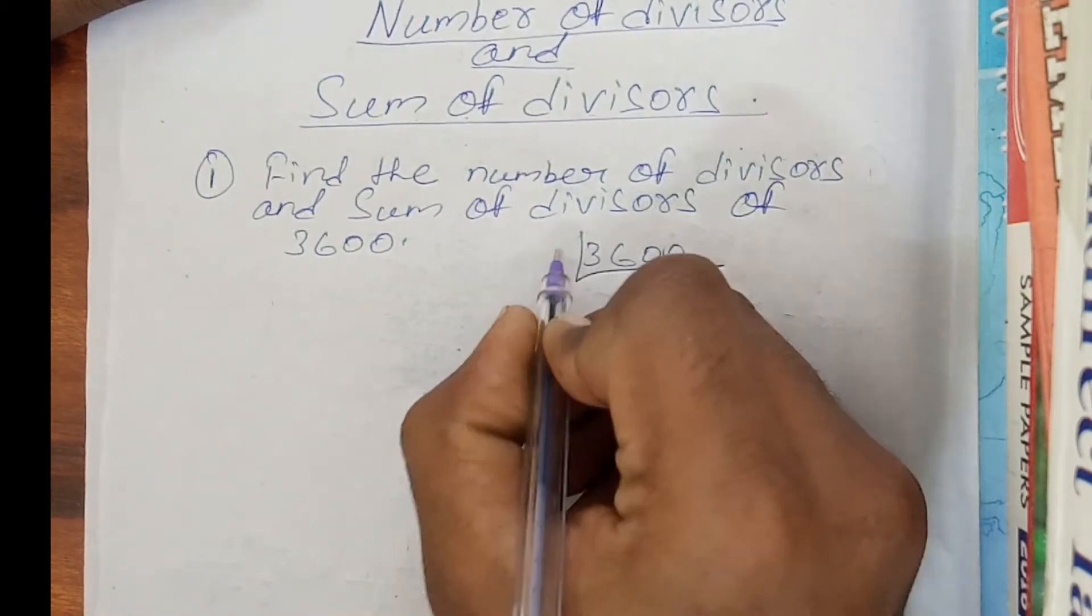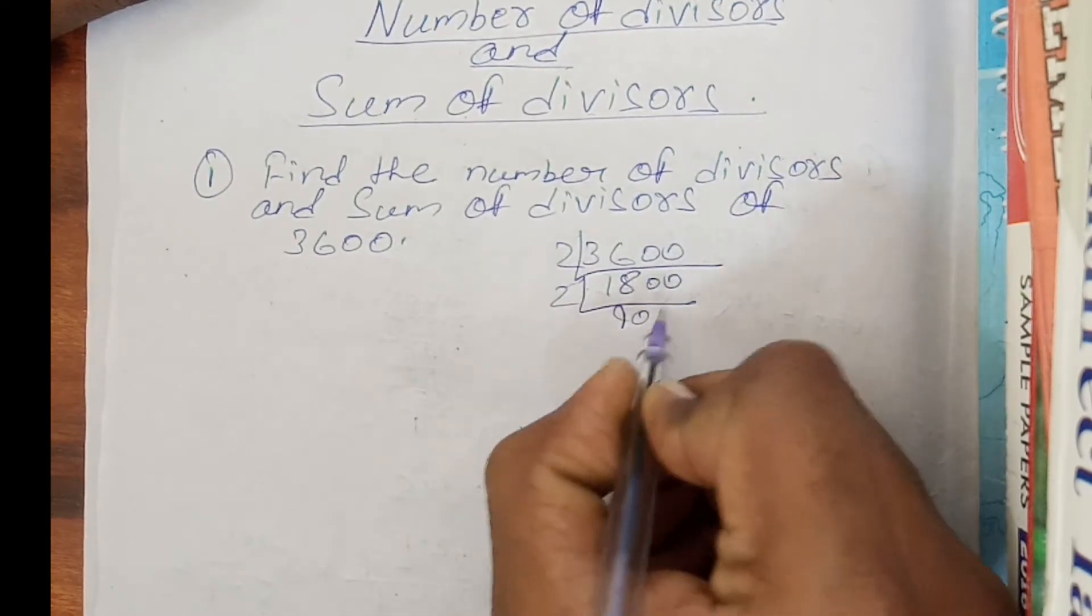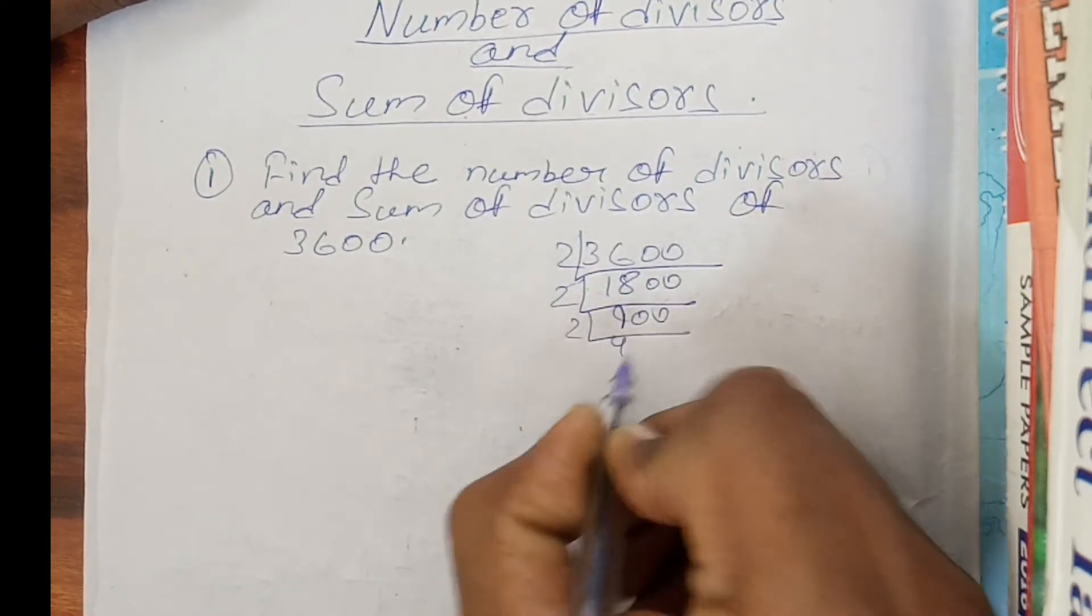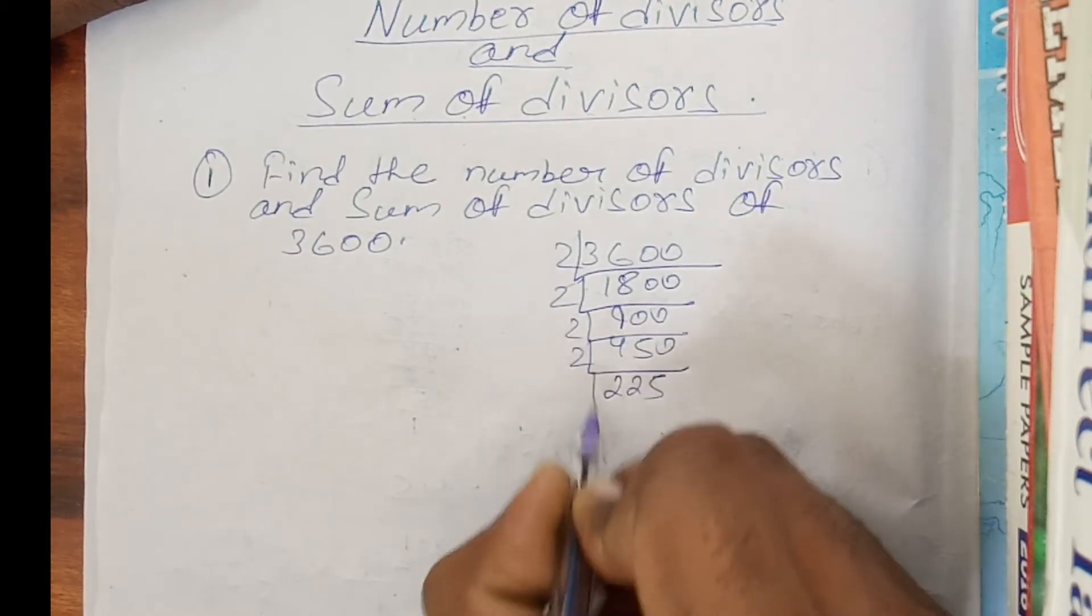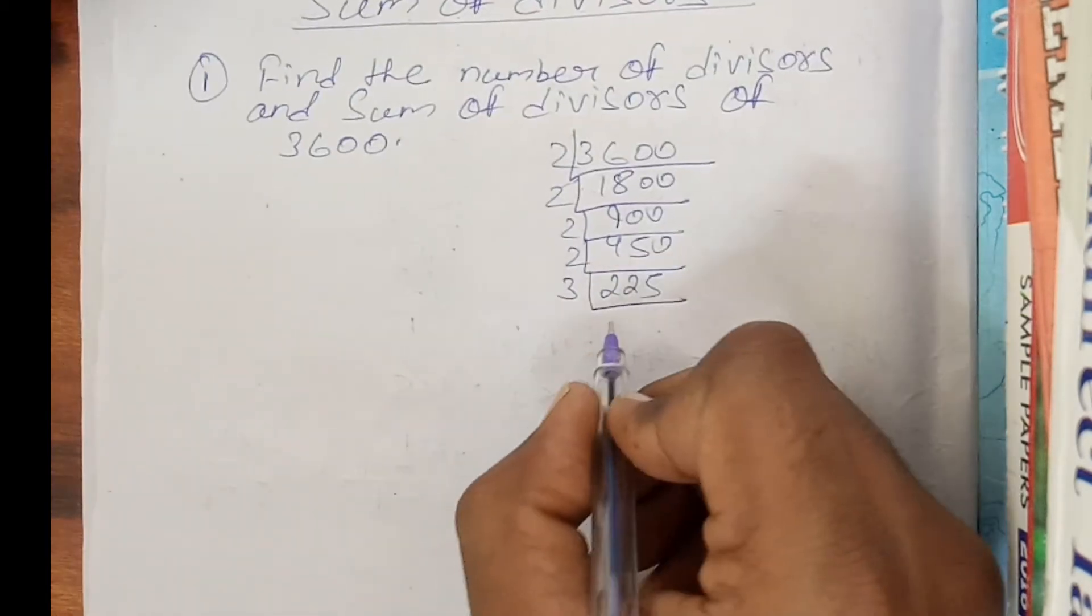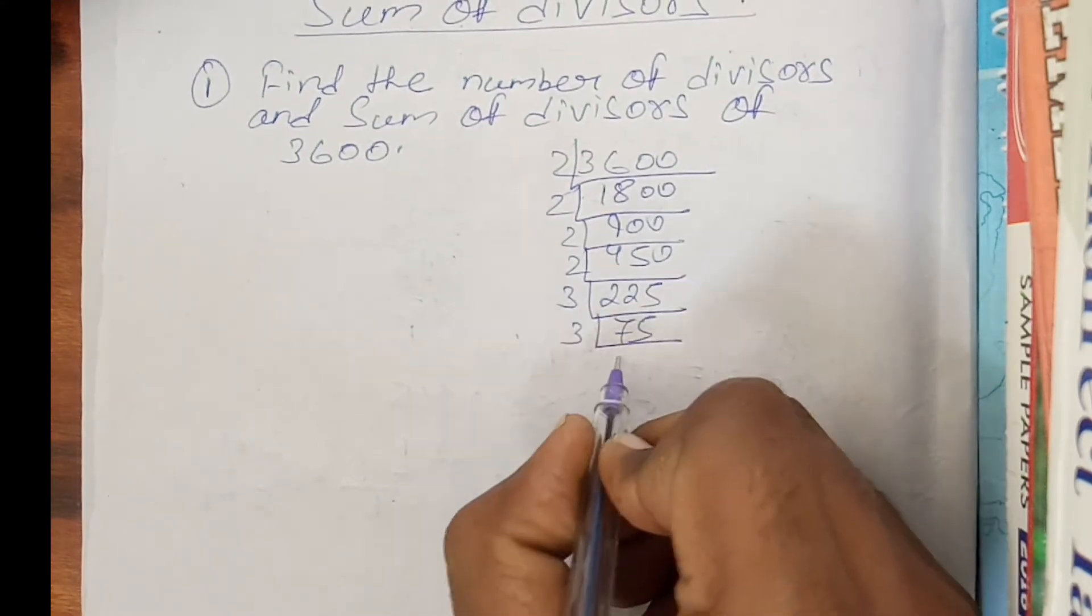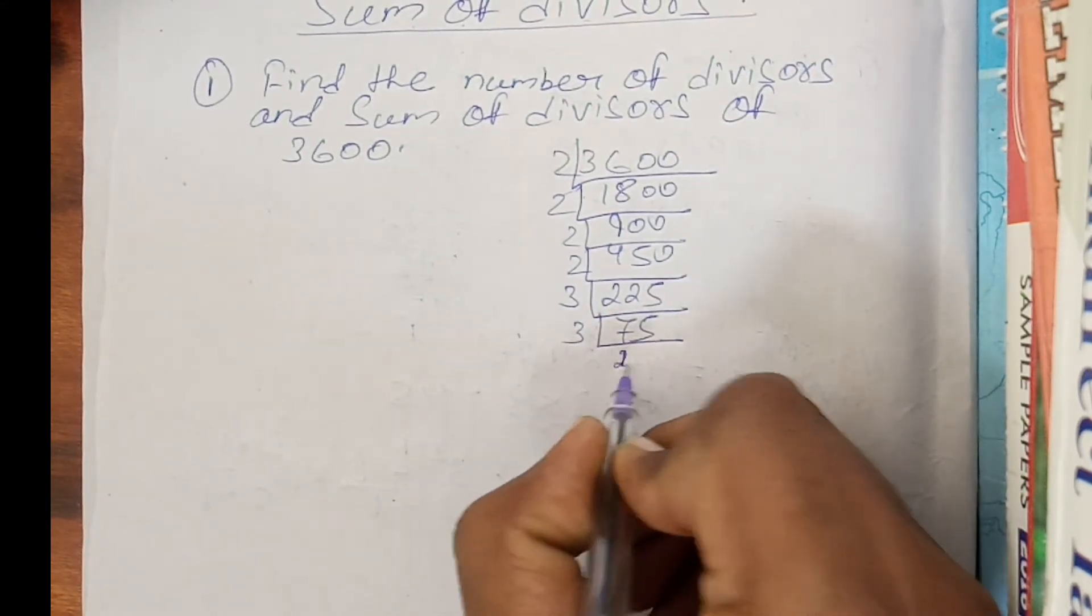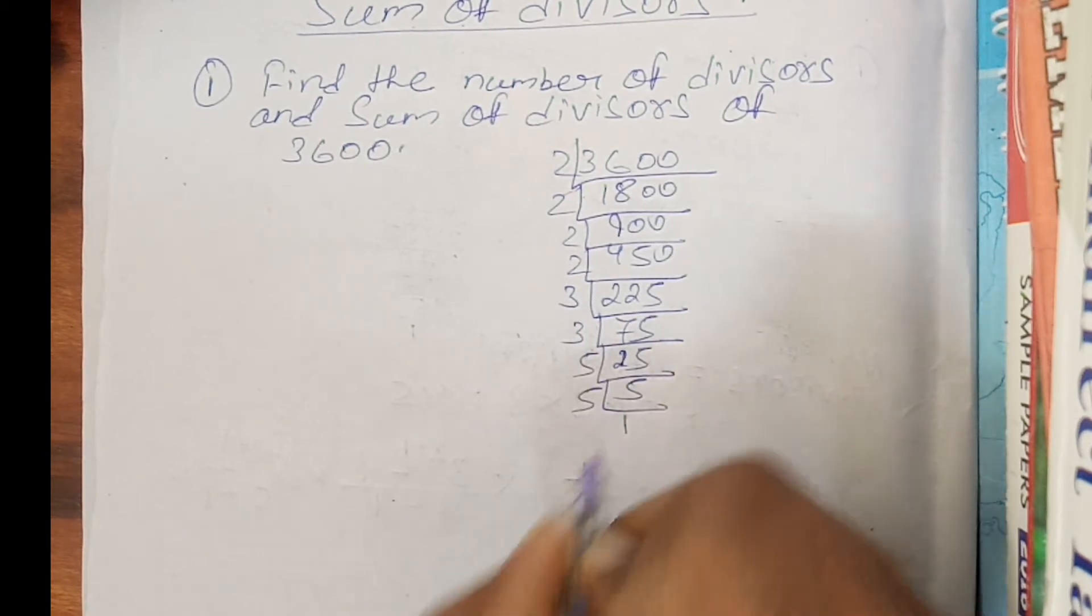3600 divided by 2 is 1800. Again with 2, 900. Again with 2, 450. Again with 2, 225. Now with 3. Again with 3. Then with 5. And lastly 5.